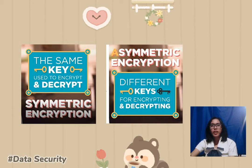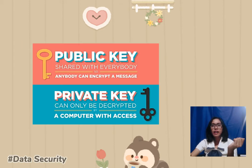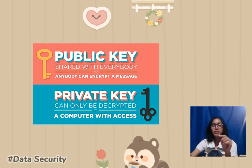Next are symmetric and asymmetric encryption. The difference is that symmetric encryption is when the sender and receiver share the same key to scramble and unscramble the message, while asymmetric uses a public key that can be exchanged with anybody and a private key that is not shared. The public key allows anyone to encrypt a message, while the private key can only be used to decrypt by a computer that has access to it.